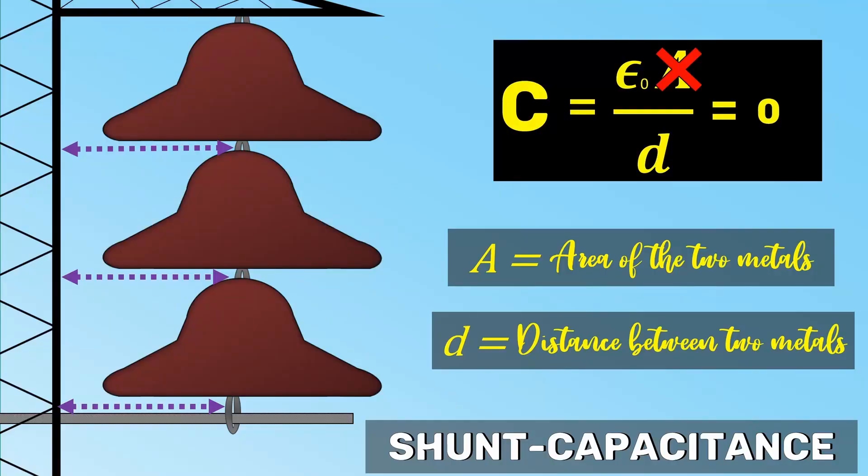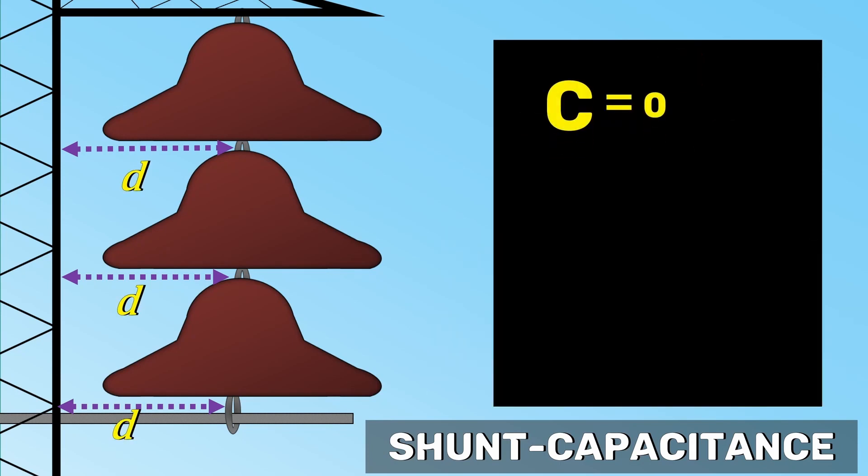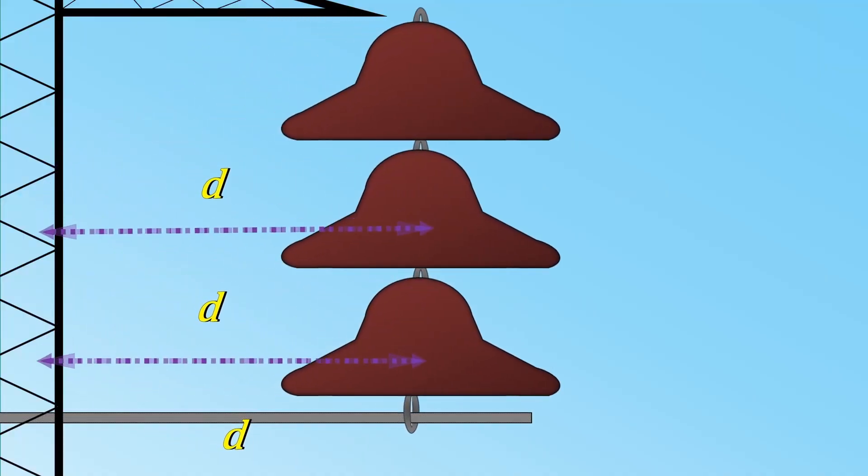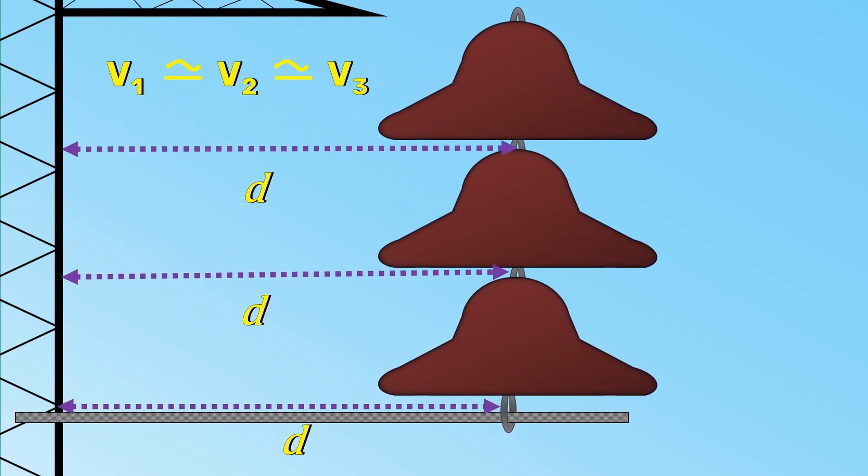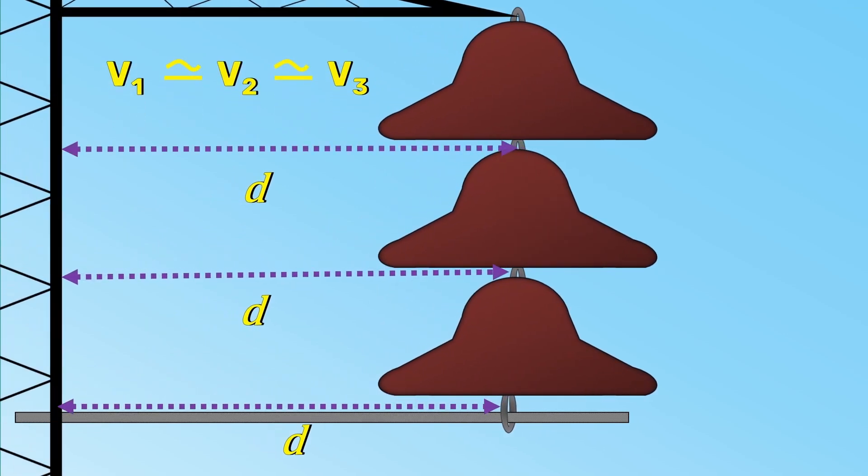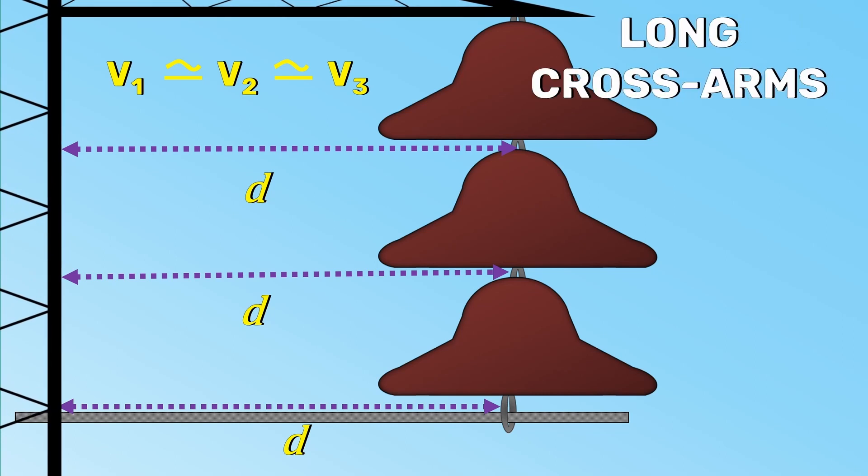So, our only option is to adjust the distance. In order to make it 0, we need infinite distance. In practice, the infinite distance is not possible. However, with a very long distance, we can get close to 100% string efficiency. This also means we need long cross arms.